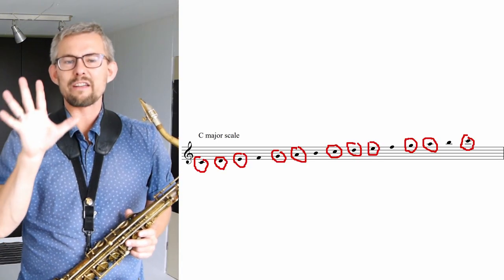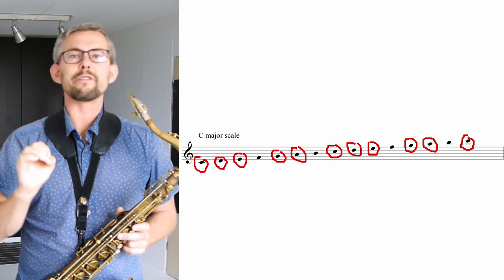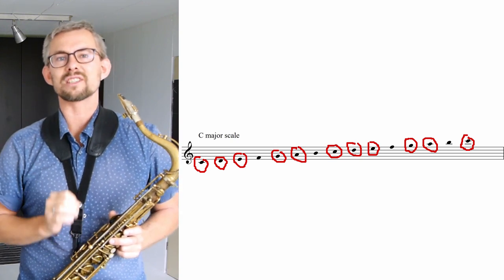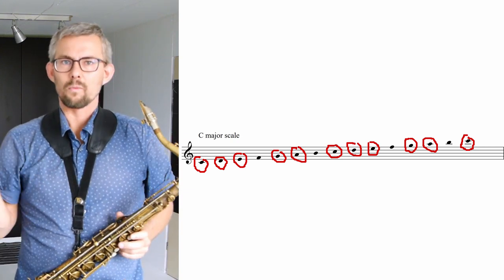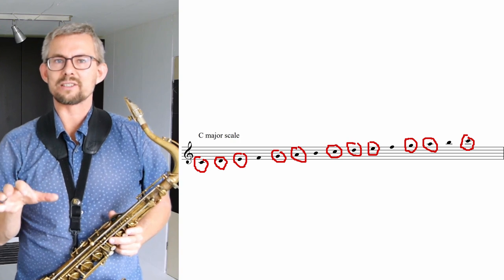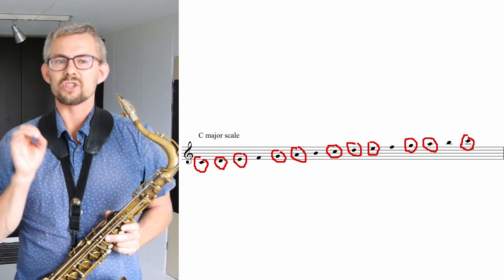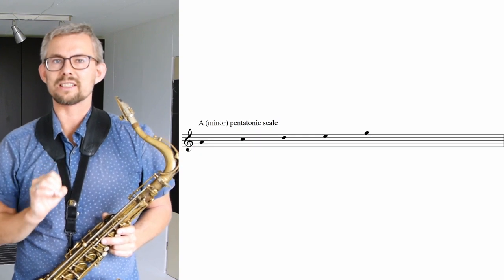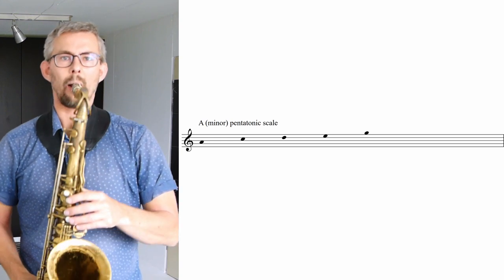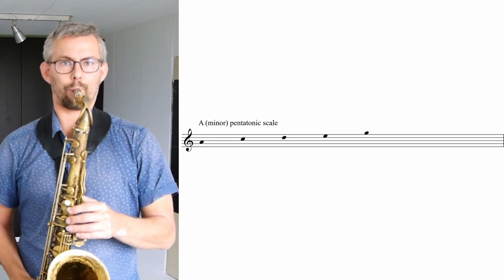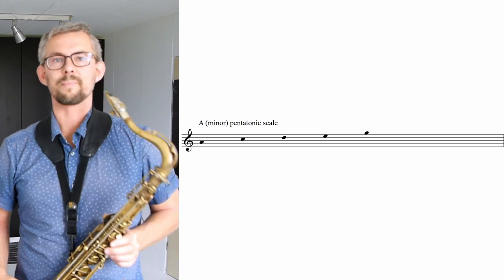We take some notes out of the major scale to get the pentatonic scale. We want five notes, so we're taking the root, the ninth, the fifth, and the sixth of the major scale — that's C, D, E, G, and A. When we put these together, we get a pentatonic scale. Looking at it from the minor side, my A minor pentatonic scale looks like this: A, C, D, E, G.